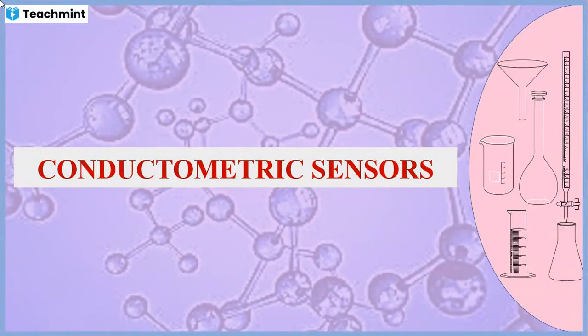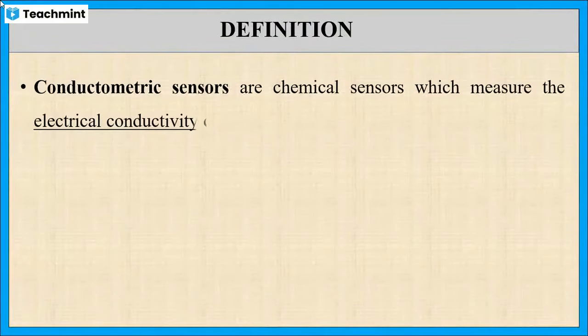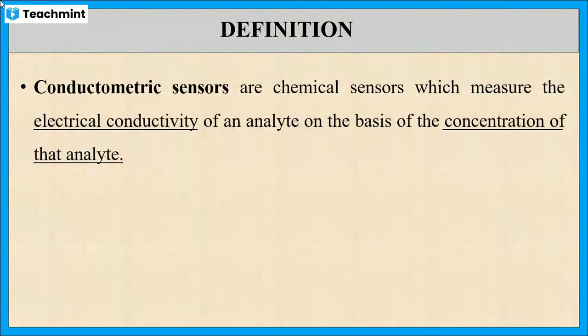In this session, let us discuss conductometric sensors. These are chemical sensors which measure the electrical conductivity of an analyte on the basis of the concentration of that analyte.